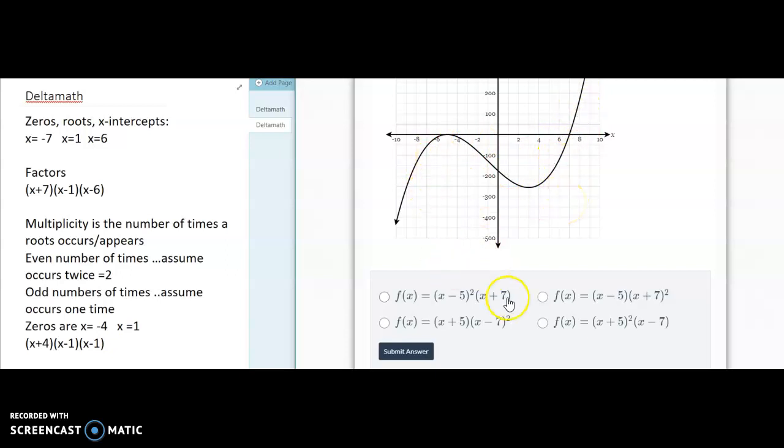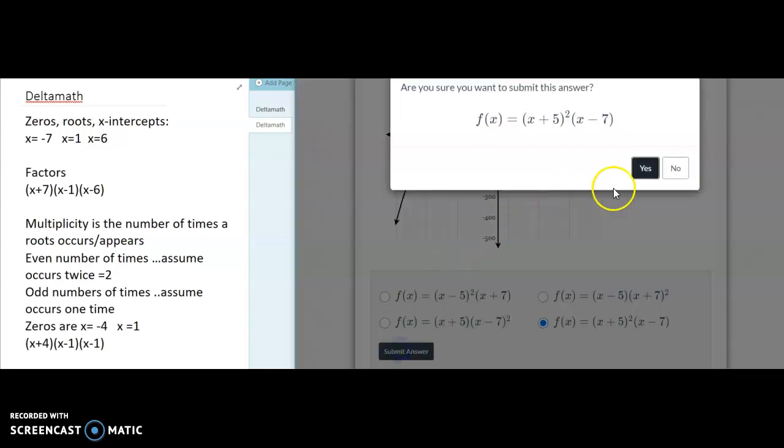So which one of these is it? It is d because this is negative 5, so the factor always includes the x is x plus 5 squared. And then you got a negative 7. So there's our answer.